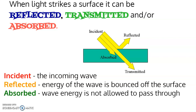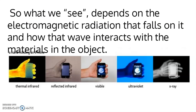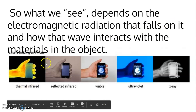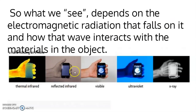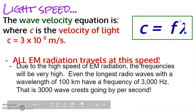What you see actually depends on the electromagnetic radiation that falls on an object. With a thermal radiation scanner, you see heat signatures; with visible light you see the normal image; with ultraviolet or x-ray you can see through the hand. Everything you see depends on what electromagnetic radiation falls on the object.